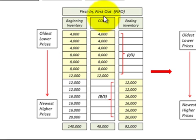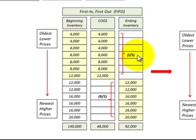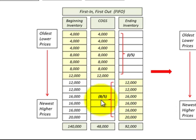Let's review each of our inventory methods. Starting with FIFO — this is where we used our oldest inventory first, and that's what would be included on our income statement as cost of goods sold, at the lower-priced inventory. For our ending inventory, that would be our newest inventory with its higher prices, and that's what would be included on the balance sheet.